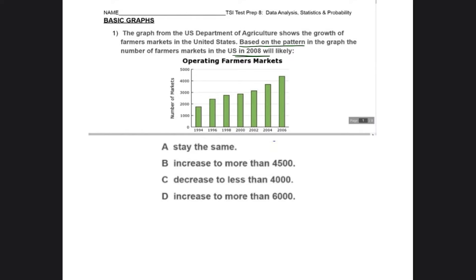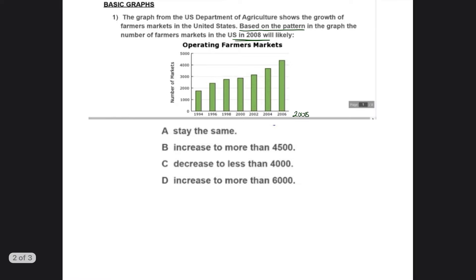It's good to note that every two years is being recorded. 1994 to 96, 96 to 98, 2000 to 2002. It's increasing by two years. So 2008 will be the very next bar on this bar graph. So now we just have to figure out, so what's the pattern between each year? And that's pretty simple to find.